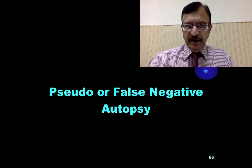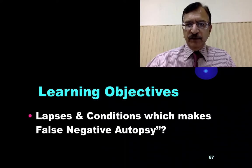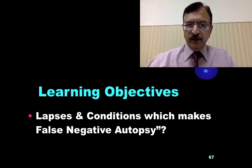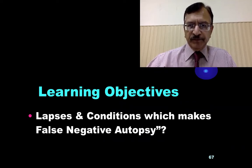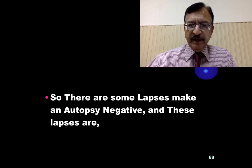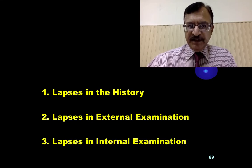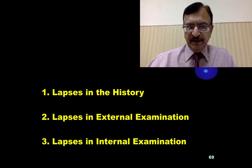In the previous lecture, we discussed the negative autopsy and pseudo-negative autopsy. Continuing with the previous topic — that is pseudo or false negative autopsy — the learning objectives of this lecture will be to learn what are the various lapses or conditions which make an autopsy negative or false negative. These lapses are lapses in the history, lapses in the external examination, and lapses in the internal examination, which we discussed in the previous lecture.